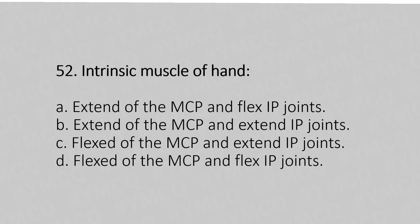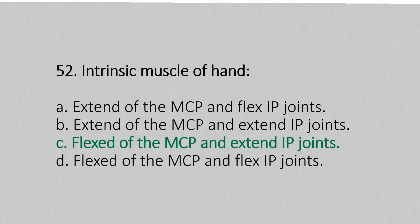Now let's move to question number 52. Intrinsic muscles of the hand: option A, extend the MCP and flex the IP joints; option B, extend the MCP and extend the IP joints; option C, flex the MCP and extend the IP joints; option D, flex the MCP and flex the IP joints. The answer is option C: flex the MCP and extend the IP joints.